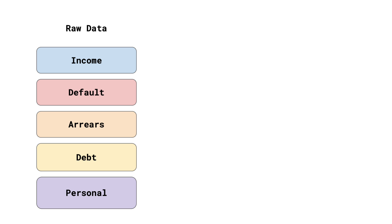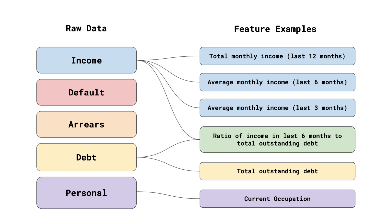But if we built a model using only claim history, it wouldn't be very good. In general, model features should come from a variety of different information sources, so your approach to feature selection should aim to create a shortlist of the most predictive features from each distinct information source.